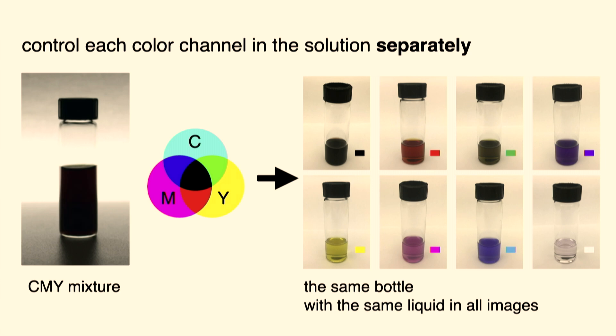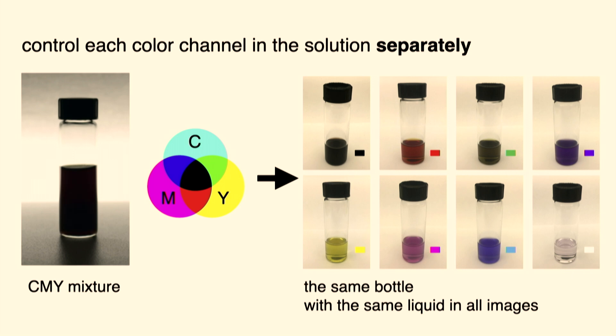How can we transform this black ink into different colors? On the side here you see different bottles — this is the same bottle in each image, the same liquid, just programmed to take on different colors. Looking at the CMY color model, what we basically do is deactivate either the cyan, the magenta, or the yellow in this black liquid. For instance, if you want to go from black to red, you deactivate the cyan dye. For green, you deactivate the magenta, leaving cyan and yellow, which gives you green.